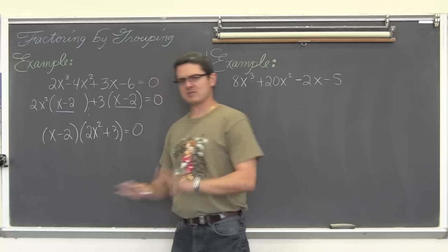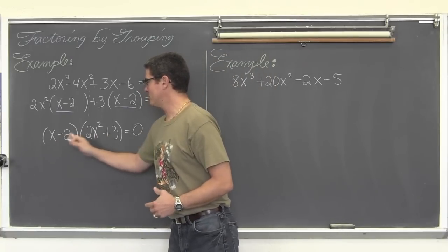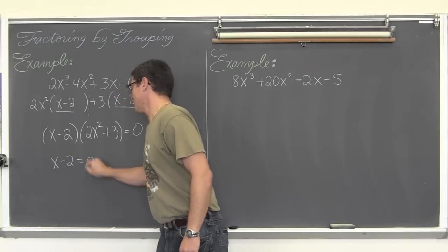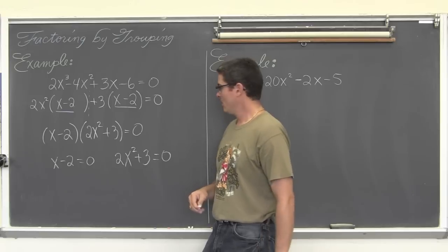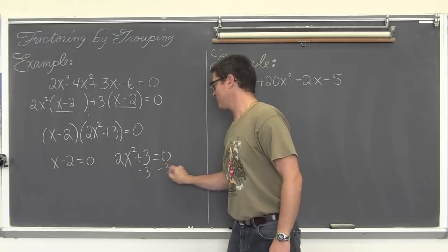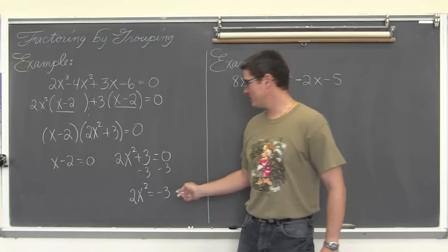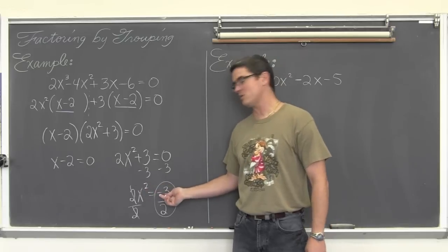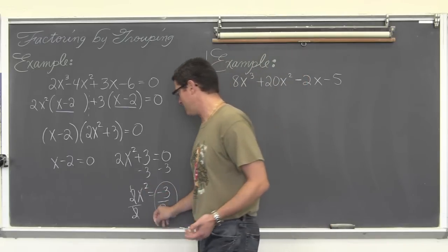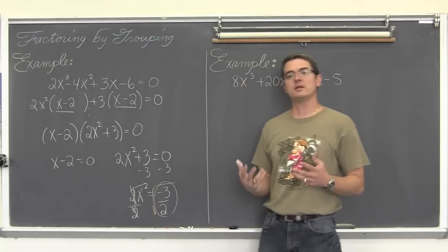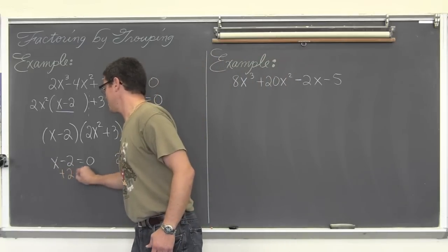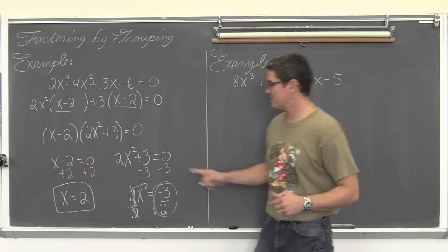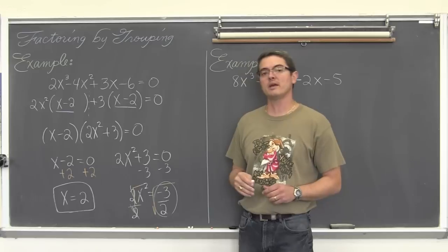I just finished factoring by grouping on my first example. For these two factors to multiply together to equal zero, one of them must equal zero. So either x minus 2 equals zero, or 2x squared plus 3 equals zero. If I try and solve 2x squared plus 3 equals zero: subtract both sides by 3, then divide both sides by 2, and I get x squared equals negative 3 over 2. Unless you are studying complex numbers, you cannot square root a negative number, so this is done. Over on the other side, adding 2 to both sides gives x equals 2 — a real solution. You can verify by plugging 2 back into the original equation and checking you get zero.